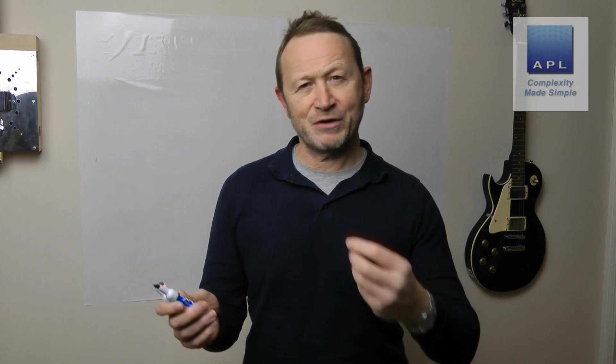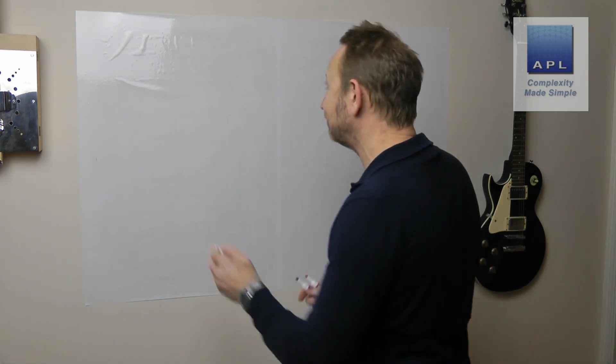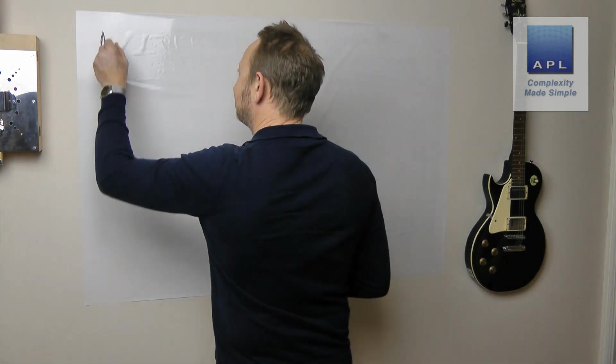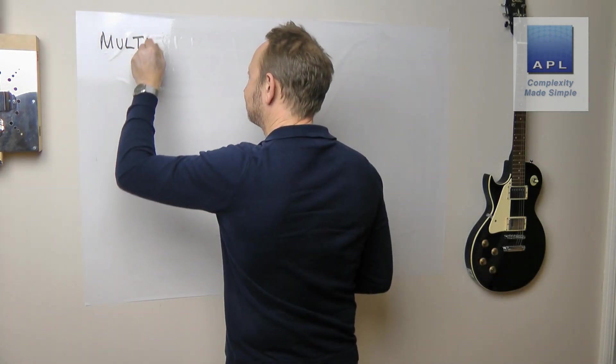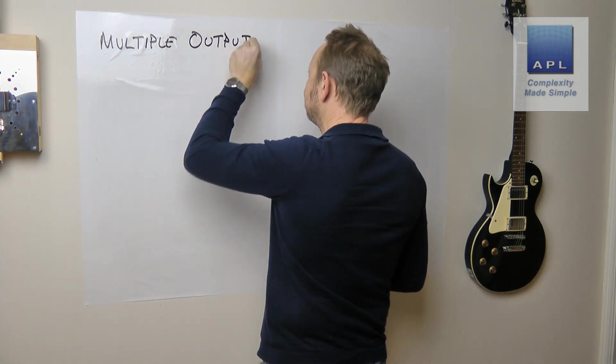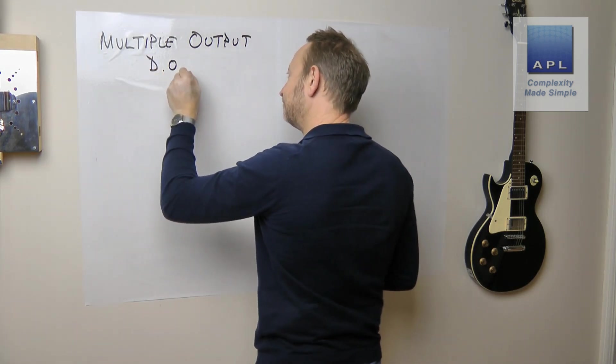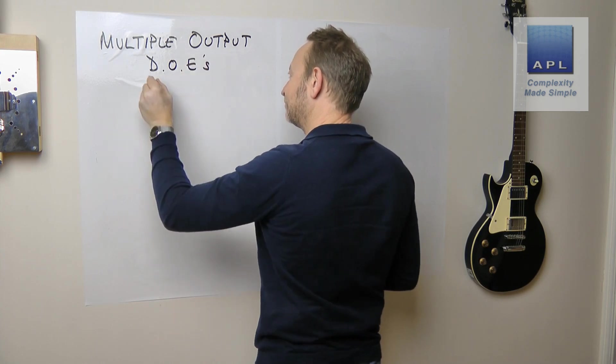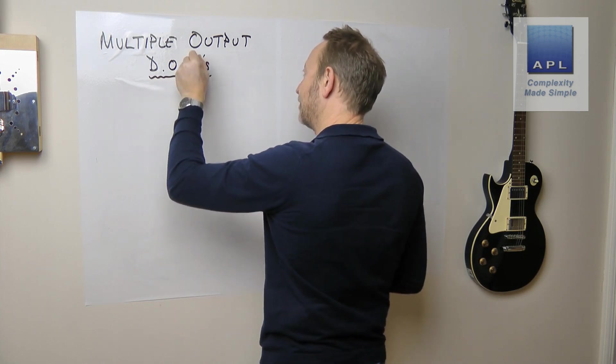Sadiq asks about multiple outputs. How do you optimize multiple outputs in a DOE? Because he's only ever worked with single outputs. So let's take a look at multiple output DOEs.